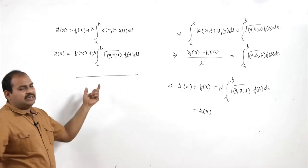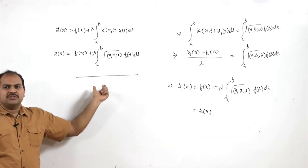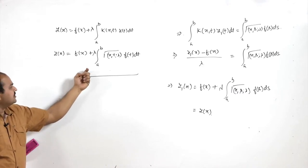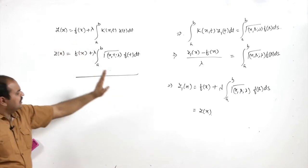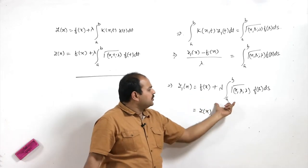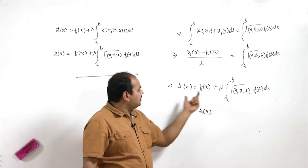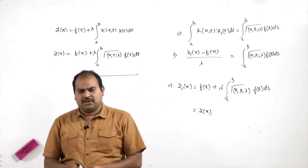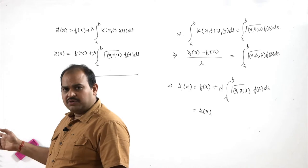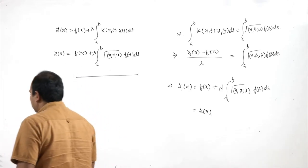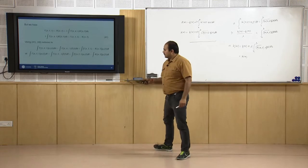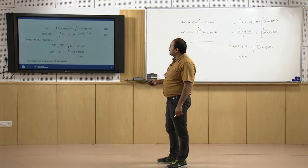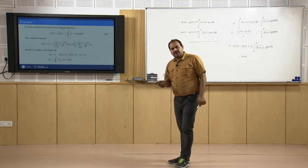This form is unique, so we can assign the name y(x) to it. If we have any other solution, it has to be of this particular form. Therefore, the solution is unique. By this argument, whatever solution we obtain is the unique solution.